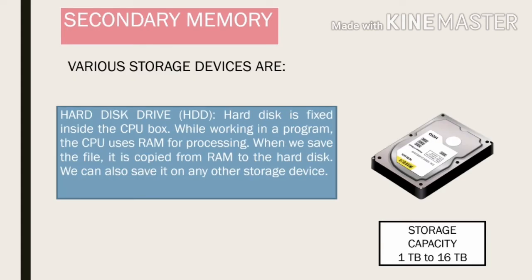Now we will talk about secondary devices. Secondary devices store the information permanently. When you save your data using the save option, it gets saved in some secondary device. Our first device is a hard disk drive — in short, we simply call it hard disk or HDD. The hard disk is fixed inside the CPU box. While working in a program, the CPU uses RAM for processing, and when we save the file, it is copied from RAM to the hard disk, or we can save it on any other secondary device. The storage capacity is 1TB to 16TB.